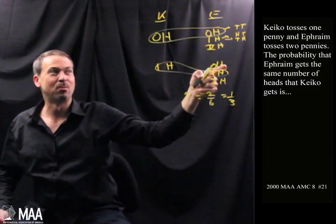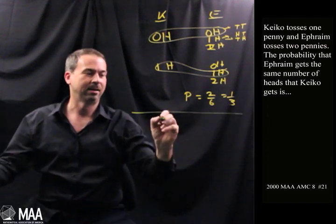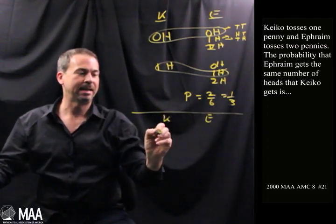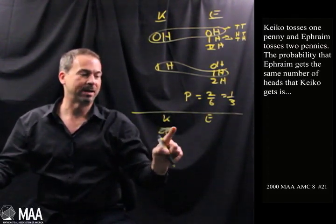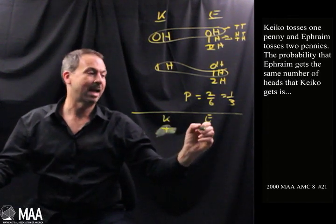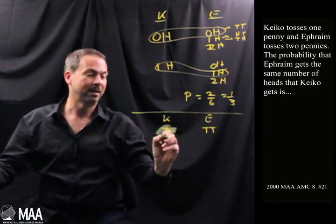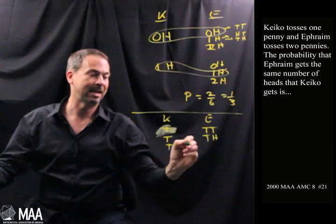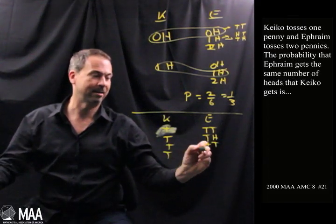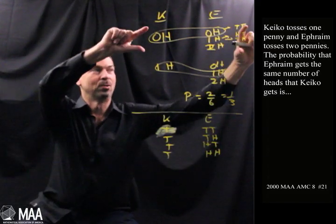So maybe this table should be more like, I'll draw it here, Keiko, Ephraim. He gets zero heads. Well, maybe we'll just write he got a tail. And he gets a tail and a tail. He gets a tail, a tail and a head, a tail, a head and a tail, a tail and a head and a head. I guess that's all those possibilities now.